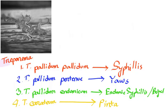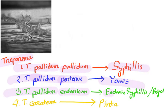The genus Treponema includes Treponema pallidum subspecies pallidum which causes syphilis, Treponema pallidum subspecies pertenue which causes yaws, Treponema pallidum subspecies endemicum which causes endemic syphilis also called bejel, and Treponema carateum which causes pinta.